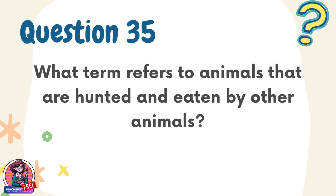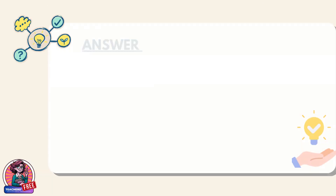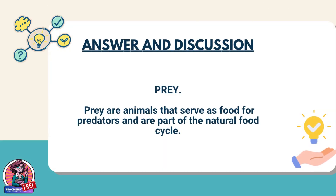Question 35. What term refers to animals that are hunted and eaten by other animals? Answer: Prey. Prey are animals that serve as food for predators and are part of the natural food cycle.